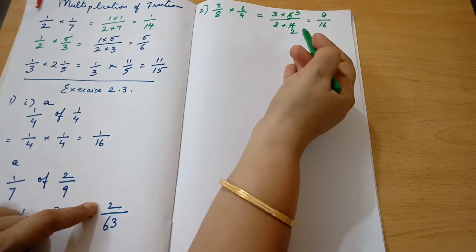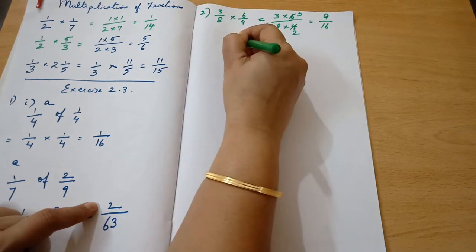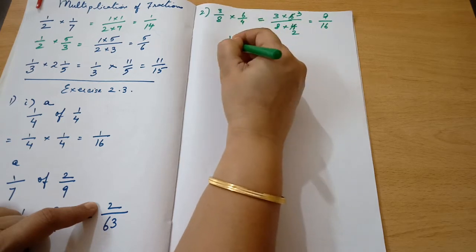You may wonder whether this is right to cancel now. You can multiply and cancel also. You will be getting the same answer. 6 into 3 is 18, 8 fours are 32.